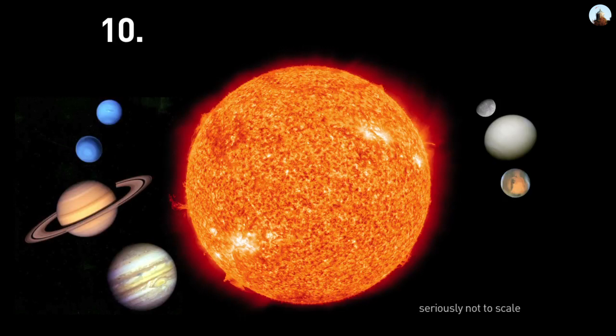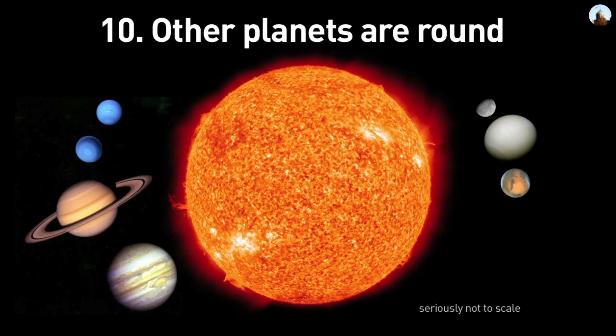10. All the other planets and stars we've ever seen are round, and there's no reason to indicate that the Earth should be any different.